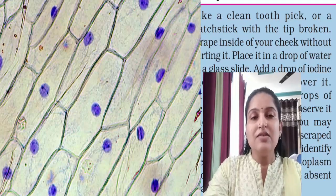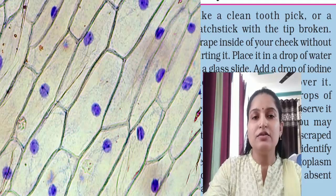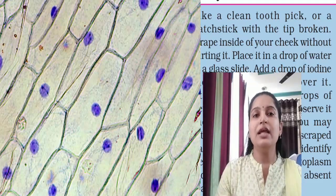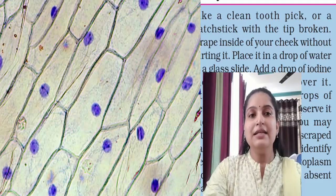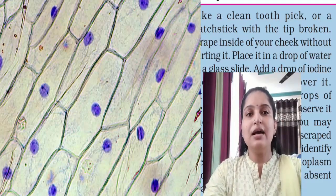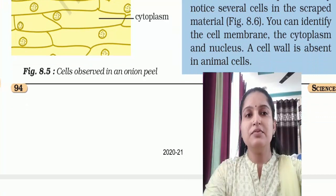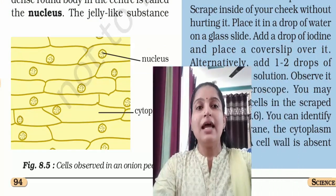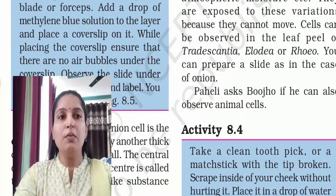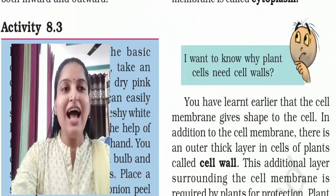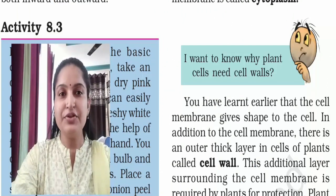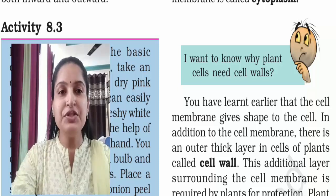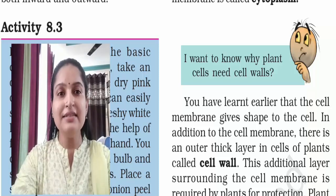The central dense round body in the center of the cell is called the nucleus, and the jelly-like substance around it is the cytoplasm. Now, Bujo wants to know: why do plants need a cell wall? That is a very good question.